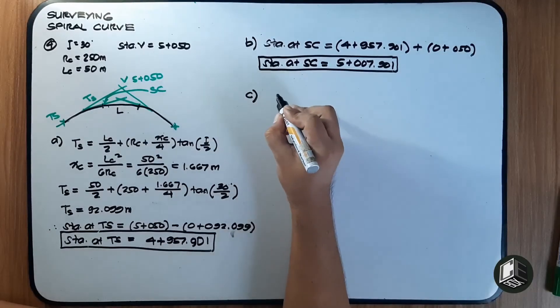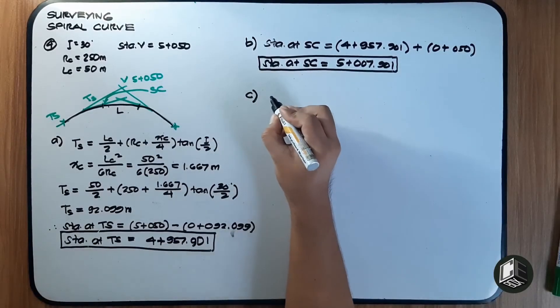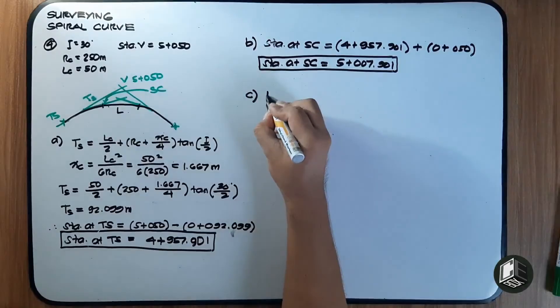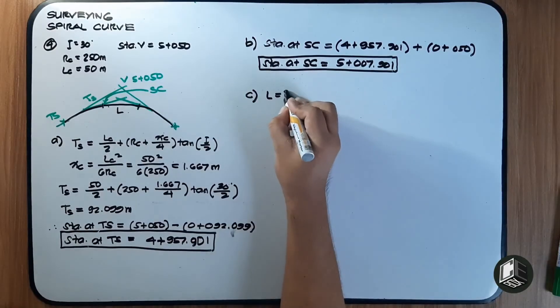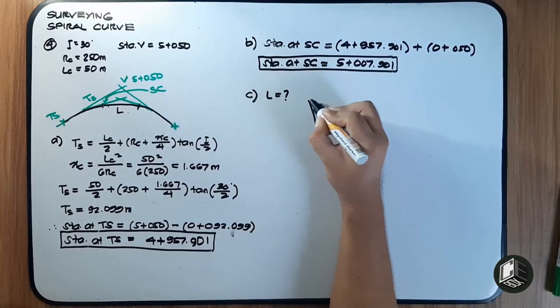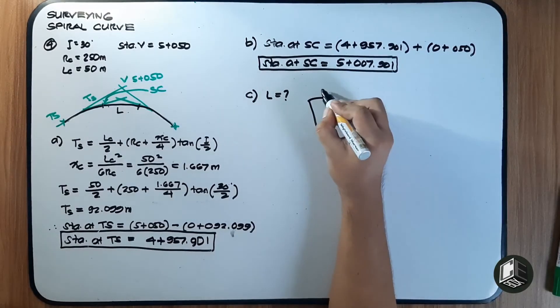For letter C, find the length of the circular curve. Using the arc length formula S equals R multiplied by theta, where S is L, R is RC, and theta is IC.